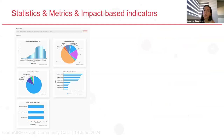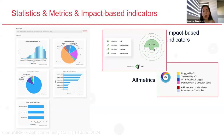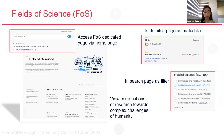We have statistics, metrics, and impact-based indicators. For projects, organizations, and data sources, we offer a variety of statistics calculated by OpenAIR for research products. For research products and data sources, we also offer usage counts — which are monthly views and monthly downloads. One important classification we support is fields of science.